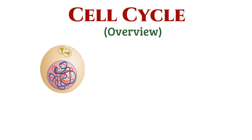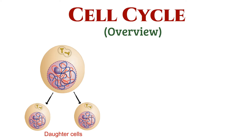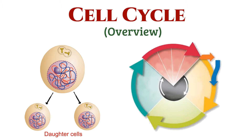The cell cycle is a dynamic process involving the division and duplication of DNA, leading to the creation of two daughter cells. It can be broadly divided into two main phases, the interphase and the mitotic phase or M phase.